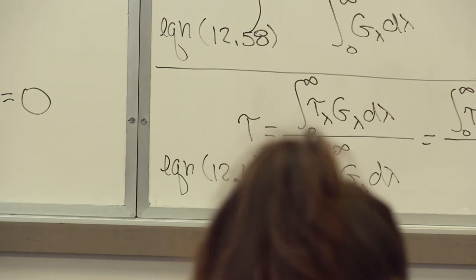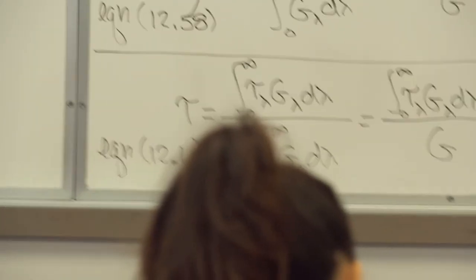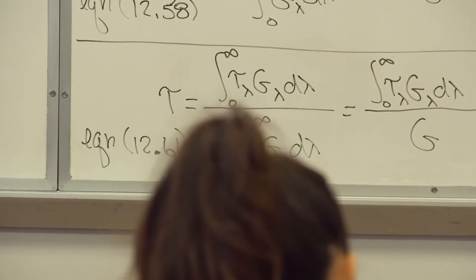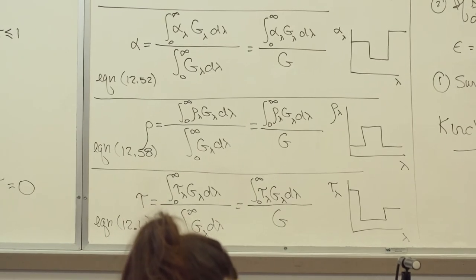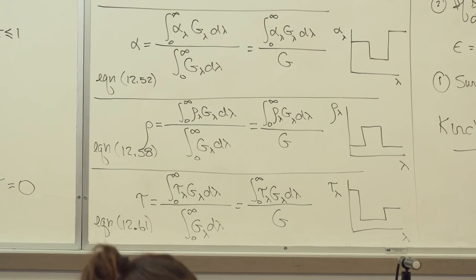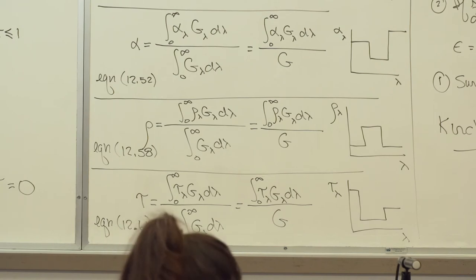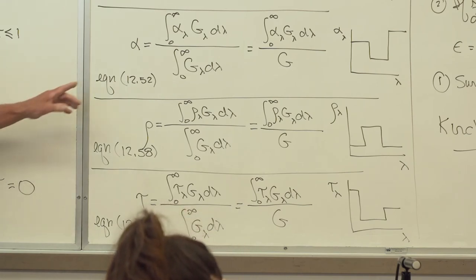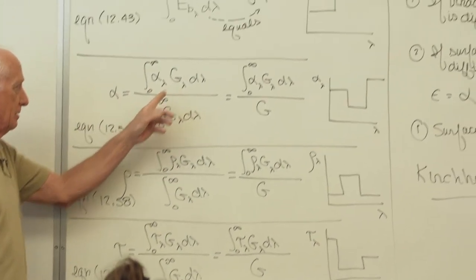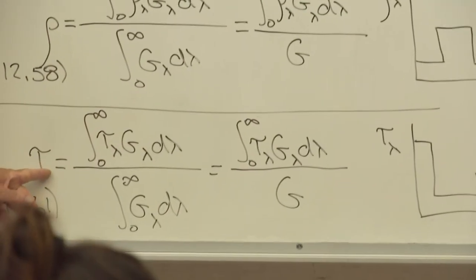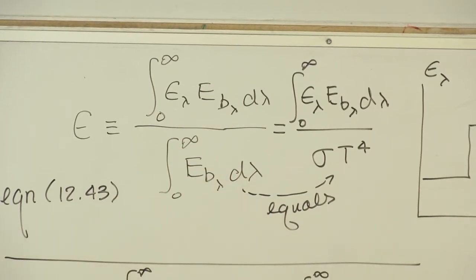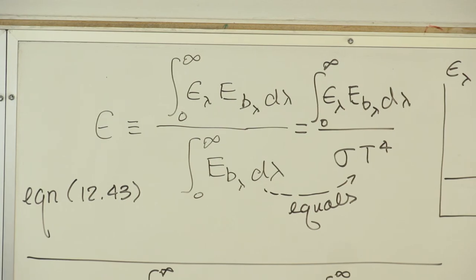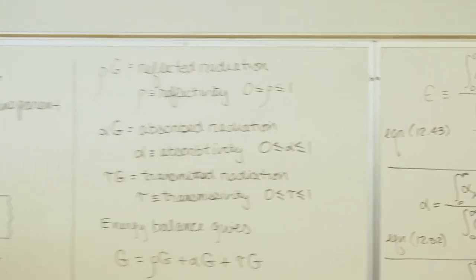And then maybe you want to find the transmissivity tau. The person giving the problem gives you a graph of tau as a function of wavelength, the spectral transmissivity, and it might look like this. Equation 12.61. So now you have four different equations giving you the properties epsilon, alpha, rho, and tau. If you're given a graph of the spectral emissivity, absorptivity, reflectivity, or transmissivity, you could find those values. Notice the G's in some equations and the E_B's in others. Absorption depends on what comes in, G. Reflection depends on what comes in, G. Emission depends on the temperature of the object, E_B. Emissivity depends on E_B.